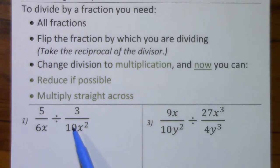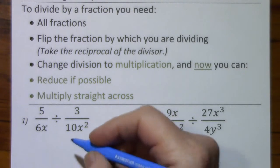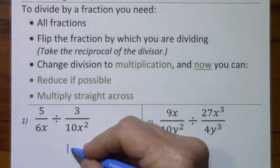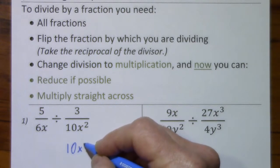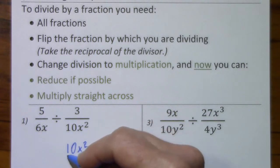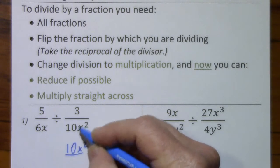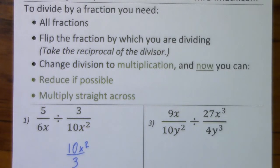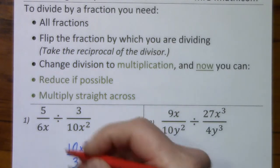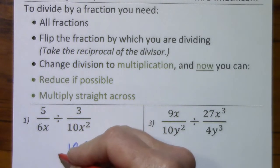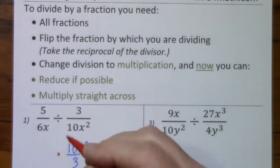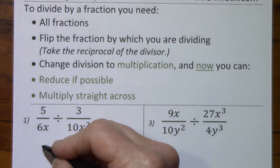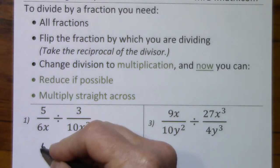We have all fractions, so we'll take the reciprocal of the divisor — or you might say, flip the fraction by which you're dividing. Change your division to multiplication, and we'll just bring down 5 over 6x.